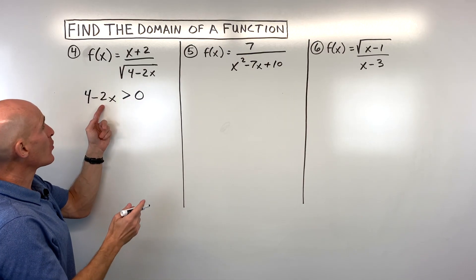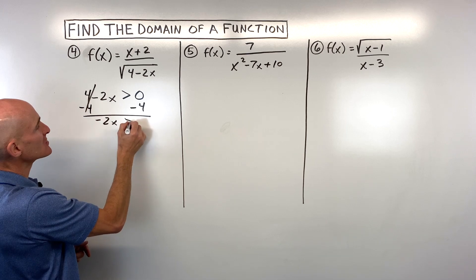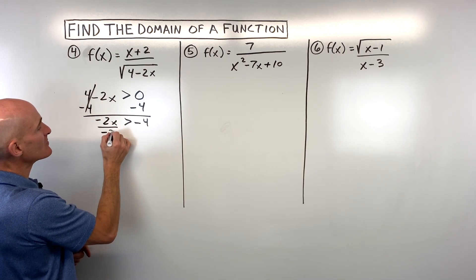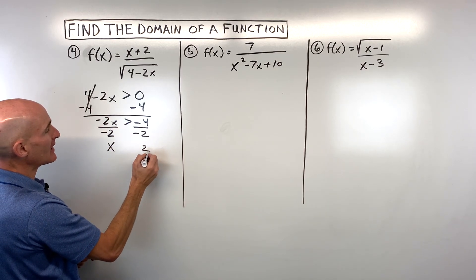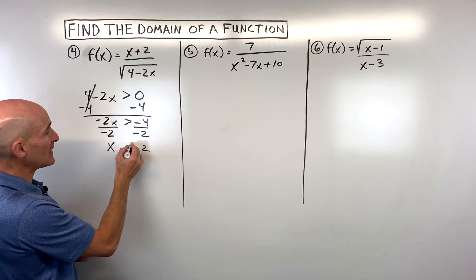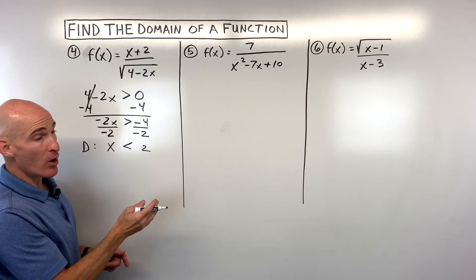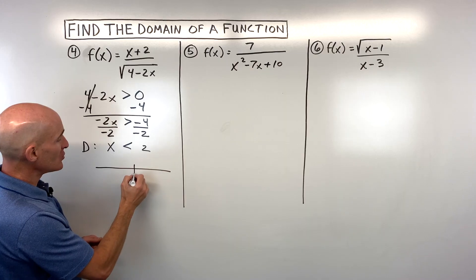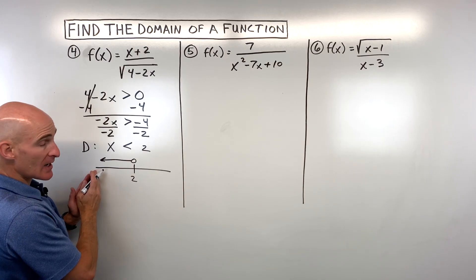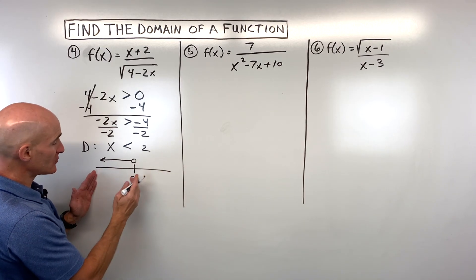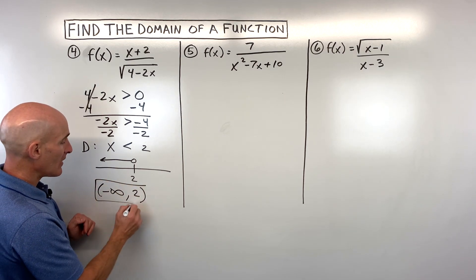Let's solve this inequality — subtract four from both sides. Negative two x is greater than negative four. Divide both sides by negative two. Remember, when you divide both sides by a negative number, the inequality sign changes direction. So our domain is x has to be less than two — that's inequality notation. In interval notation, x is less than but not equal to two, so we go from negative infinity up to two, not including two, and that's our domain.